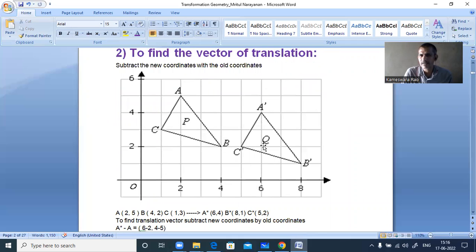By observing the transformation, this translation we can also tell see. Here see horizontally how many units it is moving. 1, 2, 3, 4. So x coordinate is 4. And vertically it is coming 1 unit down, minus 1. 4 comma minus 1 is the vector of translation.